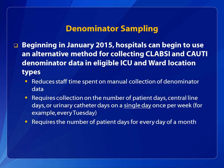Beginning in January 2015, hospitals can begin to use an alternative method for collecting denominator data for CLABSI and CAUTI for eligible intensive care unit or ICU and ward location types. This new alternative method requires the collection of patient days and central line and/or urinary catheter days one day every week — for example, every Tuesday.